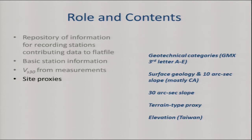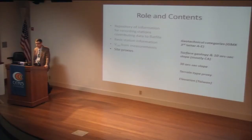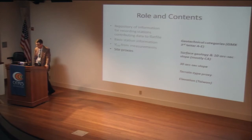We have a 30 arc-second slope — a separate slope parameter at a coarser grid. Dave Wald and his colleagues have been working on this as a proxy: you take the slope and get a VS30 from it. You cannot currently go to Dave Wald's website and get the slope directly, so we worked directly with Dave and his staff to query his source database — his digital elevation model — to get slopes for essentially all the sites.